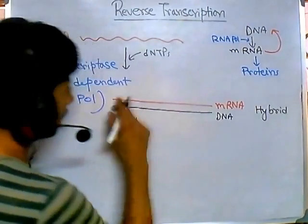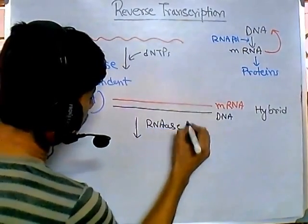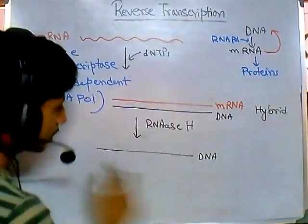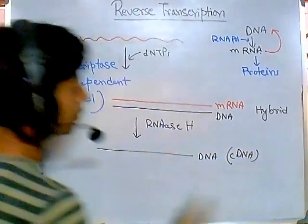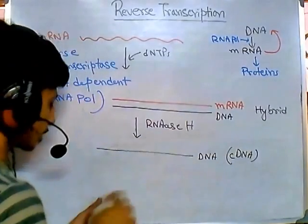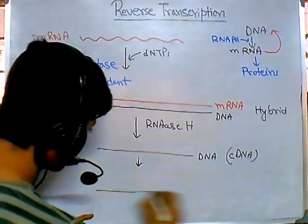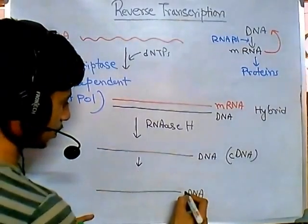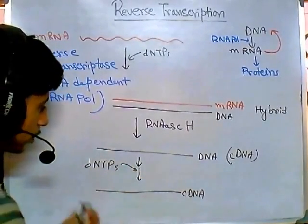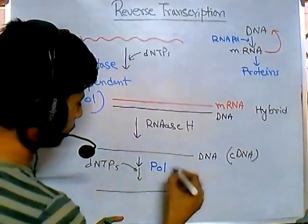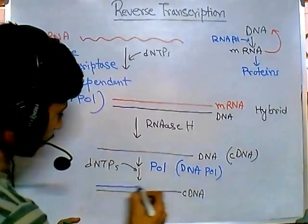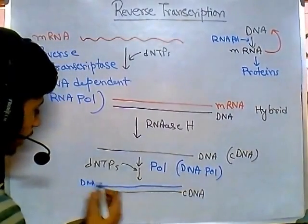We degrade the mRNA using RNase H, which degrades RNA but not DNA, so the DNA strand remains. This DNA strand is termed complementary DNA because it was produced using an mRNA template. Once we have the complementary DNA, we add more dNTPs and DNA polymerase to synthesize the second DNA strand.